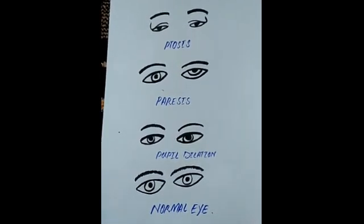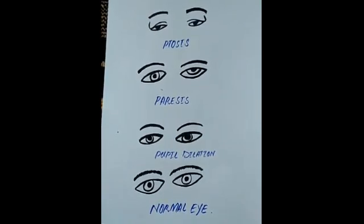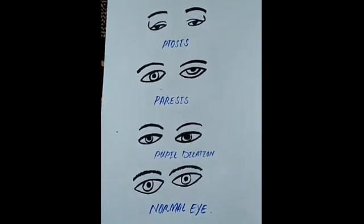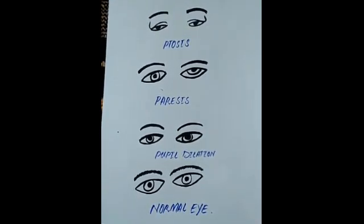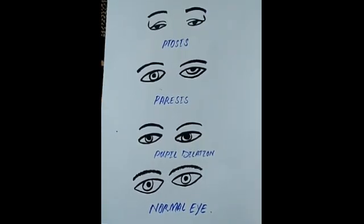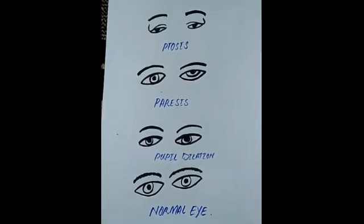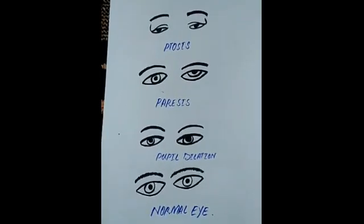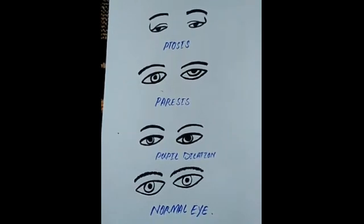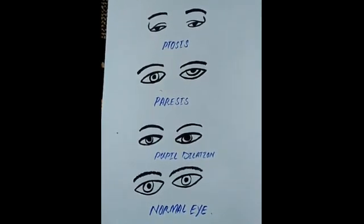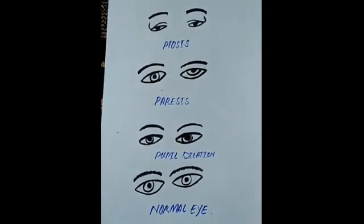Ptosis is a condition of droopy eyelids. When the levator palpebrae muscle is weak, it causes ptosis, meaning the eyelid becomes progressively weaker and droopy with age.